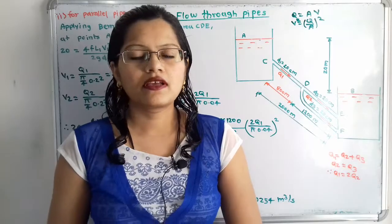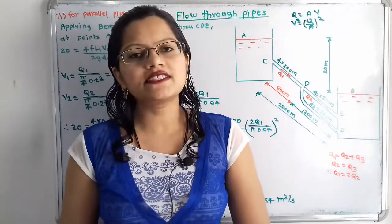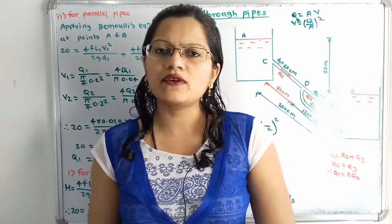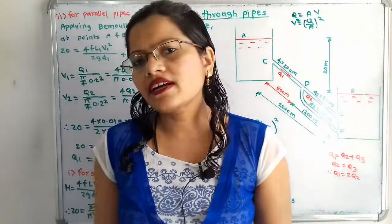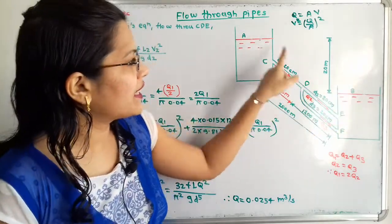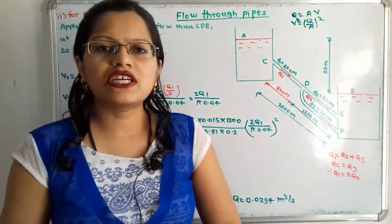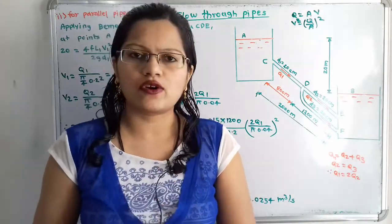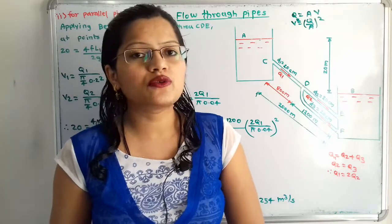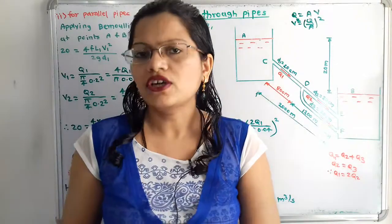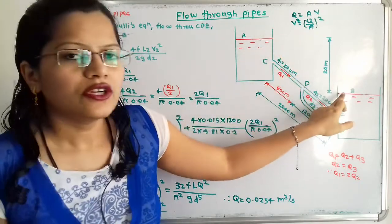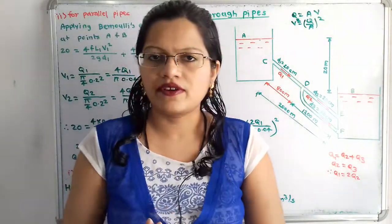In this question, we have to find out what is the increase in discharge when a parallel pipe is connected. So we first find out the discharge through a single pipe connected between two reservoirs at different levels. We consider a single pipe with length 2000 m, diameter 20 cm, and difference in heads of two reservoirs equal to 20 m. Since we ignore minor losses, the head loss between reservoirs A and B is due to major losses, i.e., friction only. So HF is equal to 20 m.